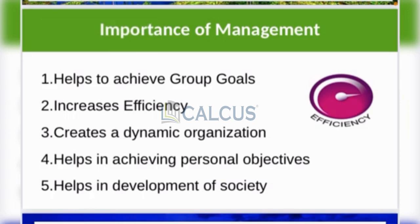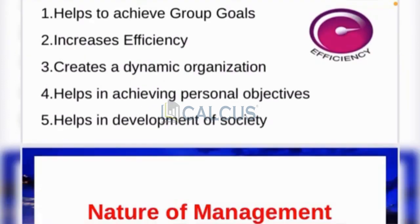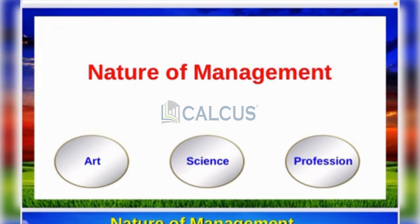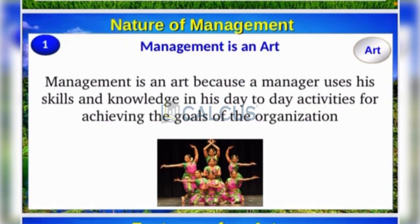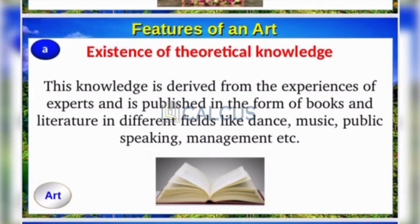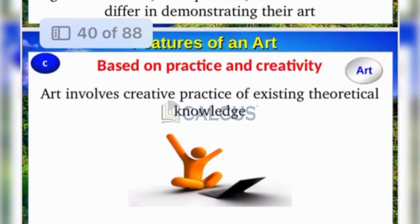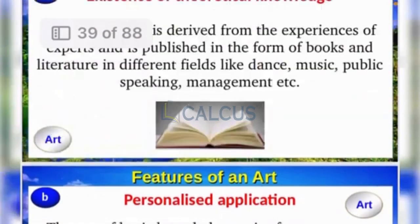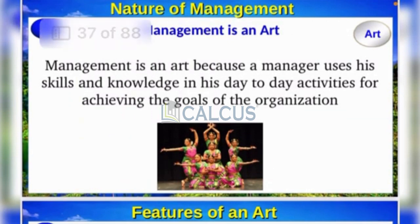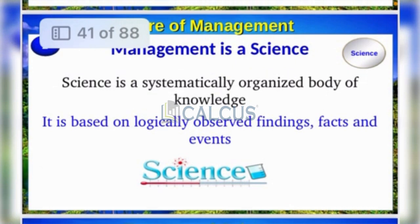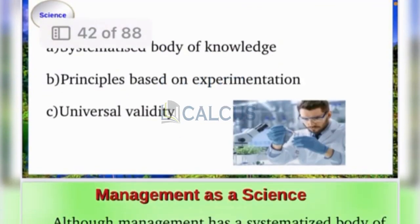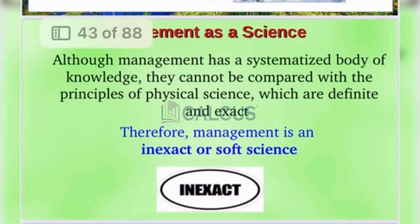It is important to understand all these things. You will learn about the nature of management — management as an art, science, and profession. Management as an art involves personal skill and application. As a science, it has principles and universal validity, though management is not an exact science — it is a soft science with limitations.